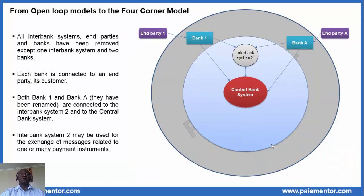It will look like this. We see two banks on the picture. Each bank is connected to the interbank system 2 and to the central bank system. Each bank is also connected to an end party. Banks have been renamed Bank 1 and Bank A to ease the understanding of what is presented in the next slides. The result is exactly the same. Interbank system 2 may be used for the exchange of messages related to one or many payment instruments, as we saw in the video about open-loop systems.